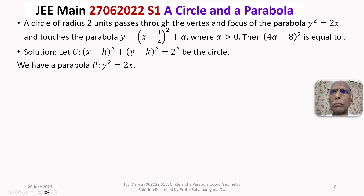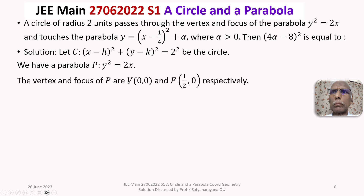The first parabola is y² = 2x. Its vertex is at the origin. Comparing with the standard form y² = 4ax, we get 4a = 2, so a = 1/2. Therefore the focus F is at (1/2, 0) and the vertex V is at (0, 0).